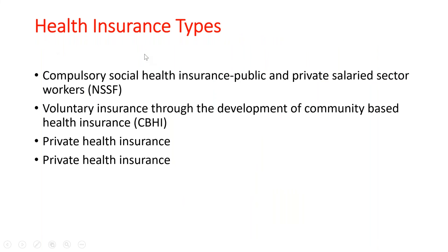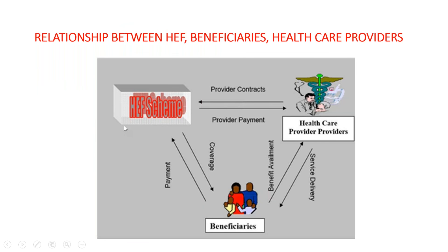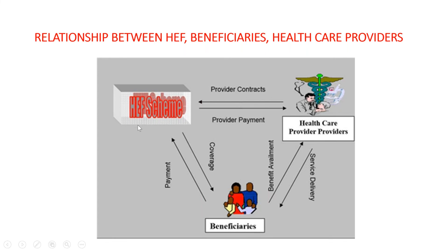In Cambodia, we have compulsory insurance for the private sector through employee salaries under the National Social Security Fund and the Ministry of Labour. We also have voluntary insurance through community-based health insurance and private health insurance. This diagram shows the relationship between the health fund, the beneficiary, and the health care provider. The health care provider contracts to provide services to beneficiaries, and the government pays the provider through the health fund scheme.